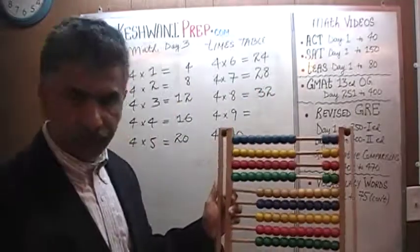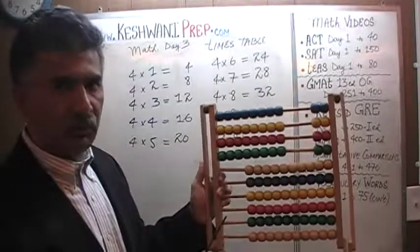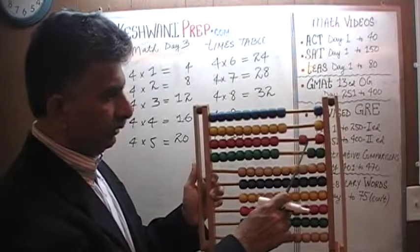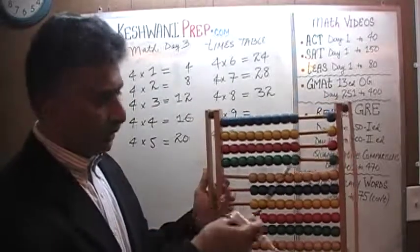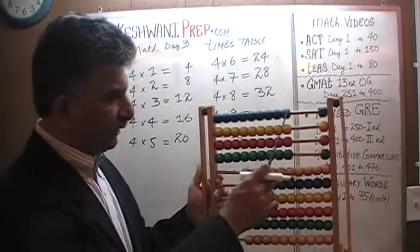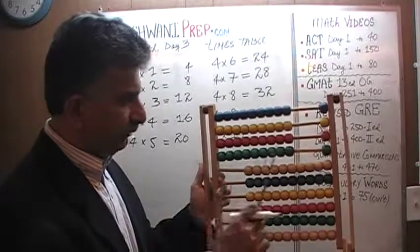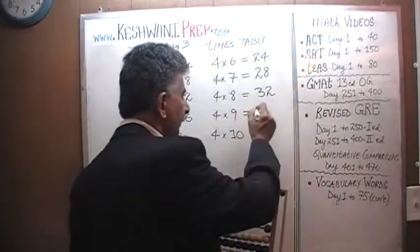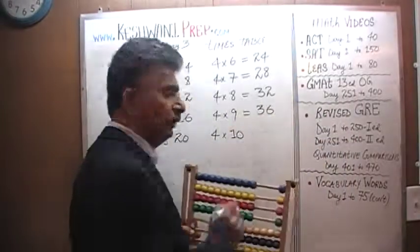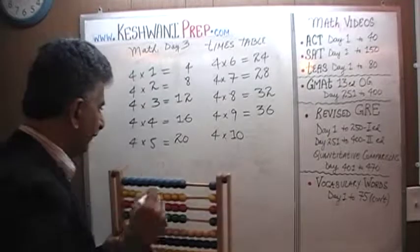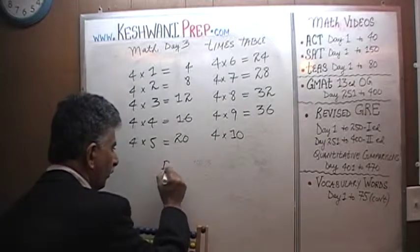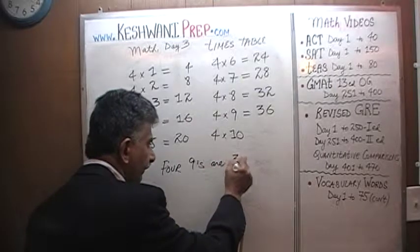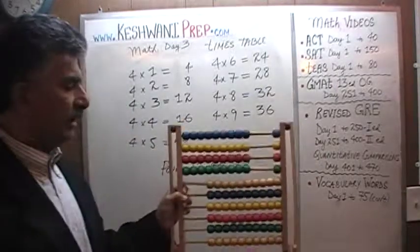What about four nines? We add four more — one to each group. Thirty-two, thirty-three, thirty-four, thirty-five, thirty-six. Now we have four nines: there is the first nine, second nine, third nine, and fourth nine. Four nines are thirty-six. This is how we write it: four nines are thirty-six.